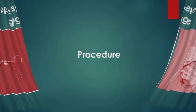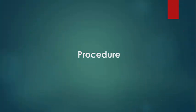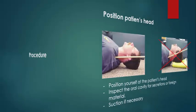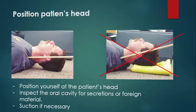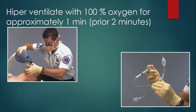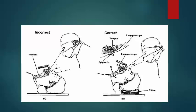Procedure for endotracheal intubation: position the patient's head and position yourself at the patient's head. Suction if necessary. Hyperventilate with 100% oxygen for approximately 1 minute. Bring your body down to the airway level with the laryngoscope.